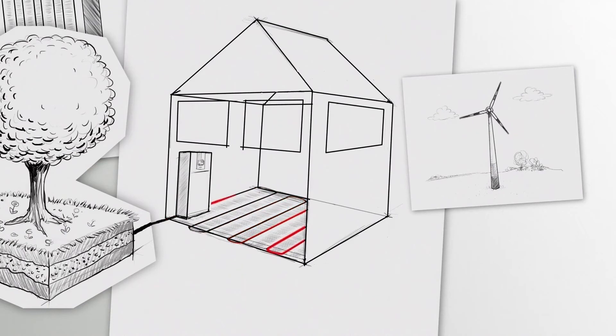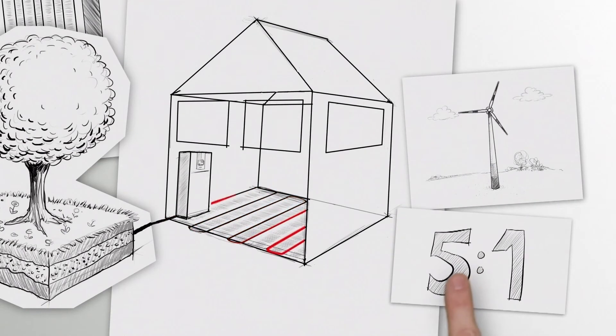You can roughly calculate the energy consumption in the ratio five to one, i.e. for every part of operating power, you gain up to five parts of free environmental energy.